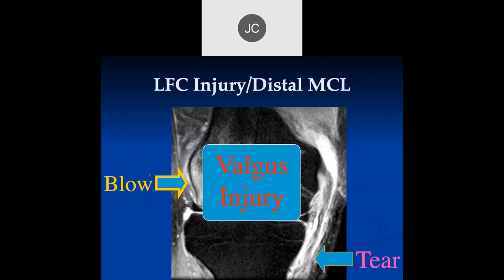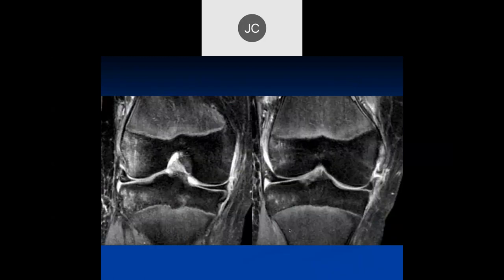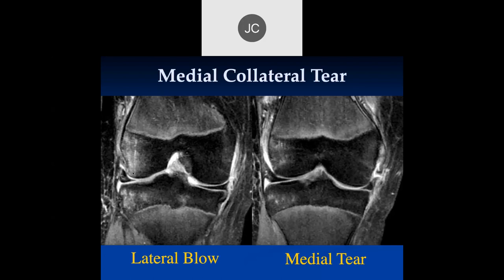This is called a valgus injury — the other leg protects the medial side of the knee, so most injuries to the knee are actually lateral injuries. But you still can get valgus injuries which can be significant. It looks like there's a tear of the medial collateral ligament and bone marrow edema in the lateral femoral condyle and the lateral tibial plateau — so lateral bone bruise and medial tear. This is a typical medial collateral ligament injury due to a varus injury. — That's a varus injury. — Yes, I'm sorry, a varus injury. Thank you.